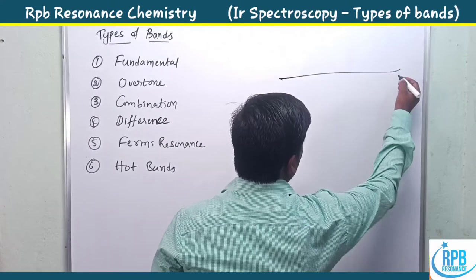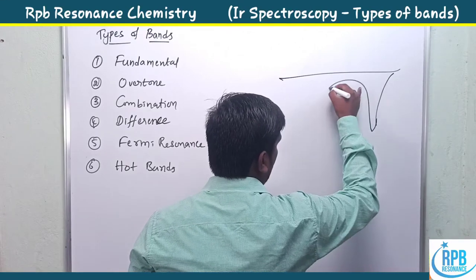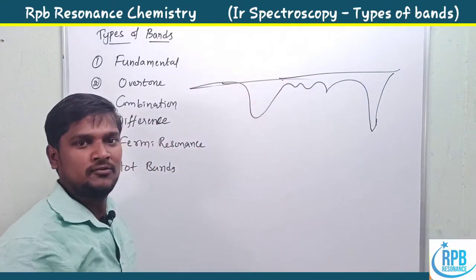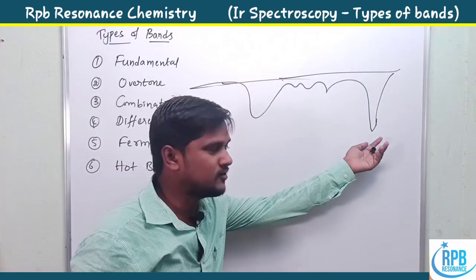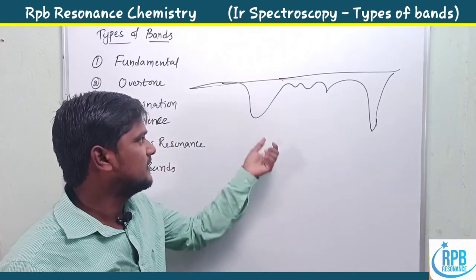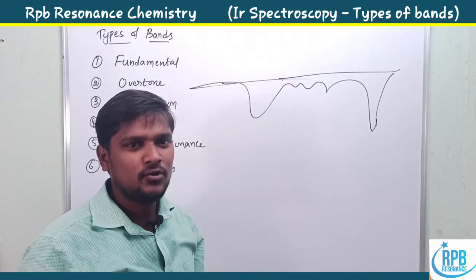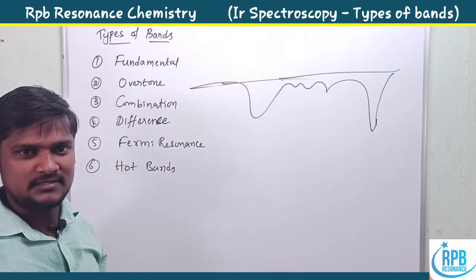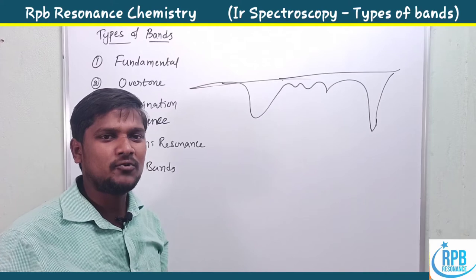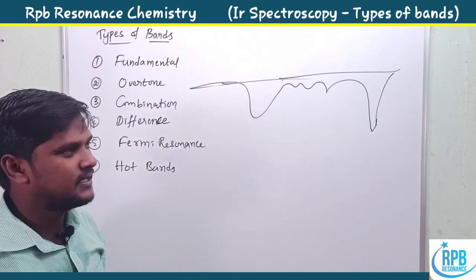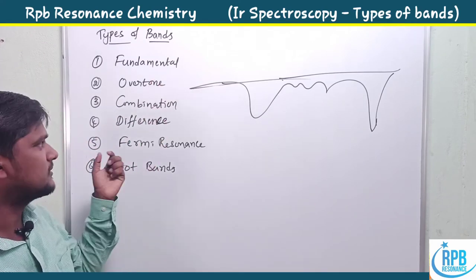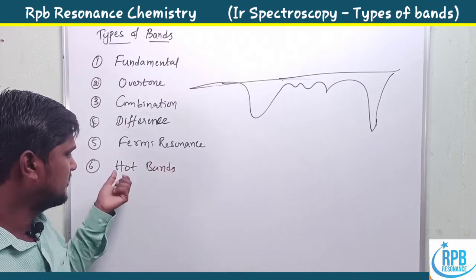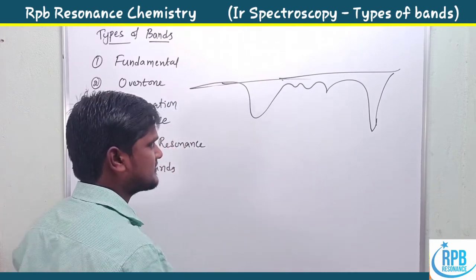In general, this is the spectrum of IR. Different types of bands are observed — some peaks are highly intensive, some are broad peaks, some are tiny peaks. Those peaks are related to different types of vibrations. A molecule undergoes different kinds of vibrations and it appears as fundamental bands, overtone bands, combination, difference, Fermi resonance, or hot bands.